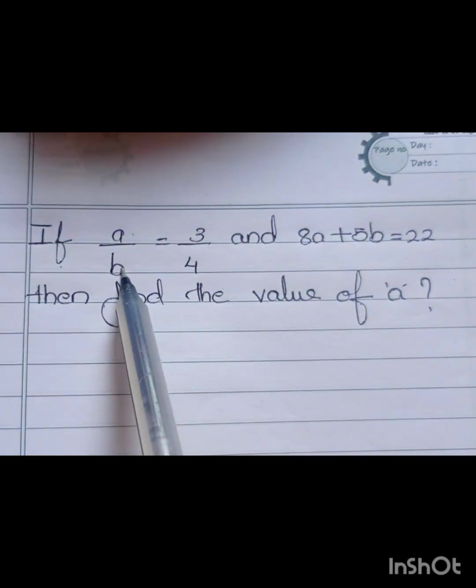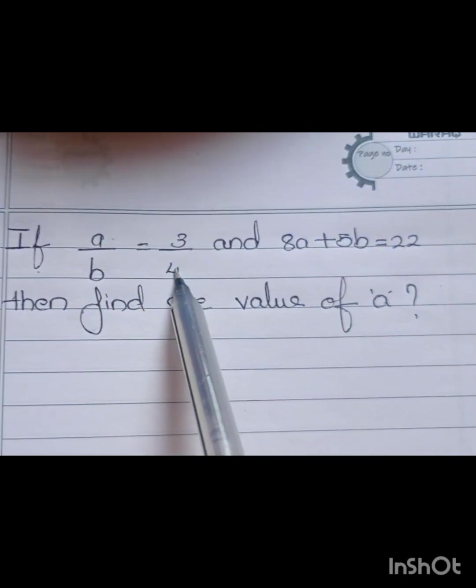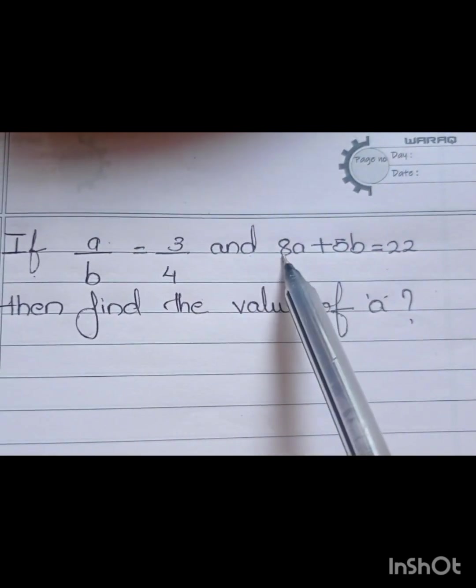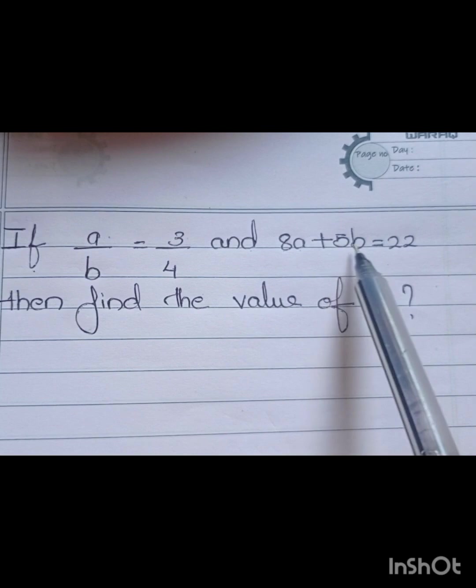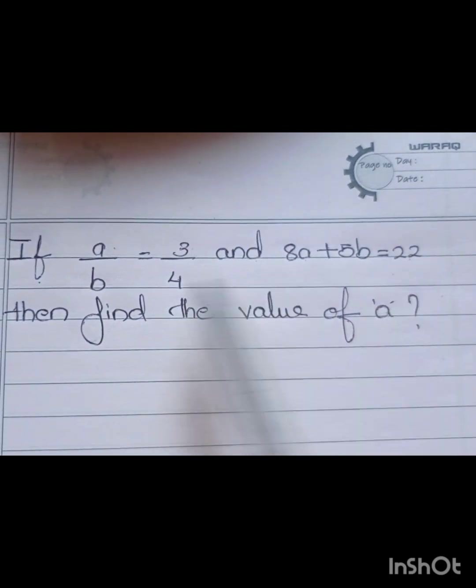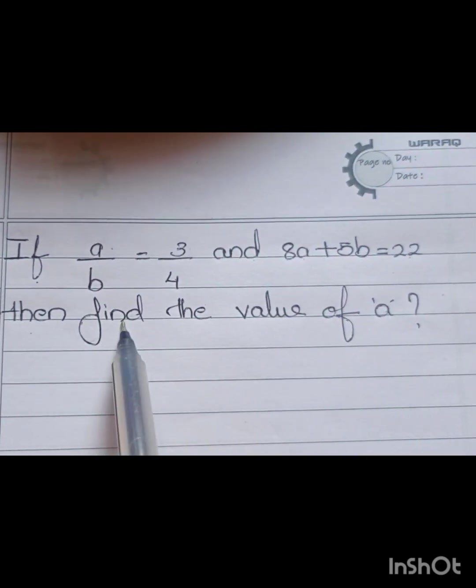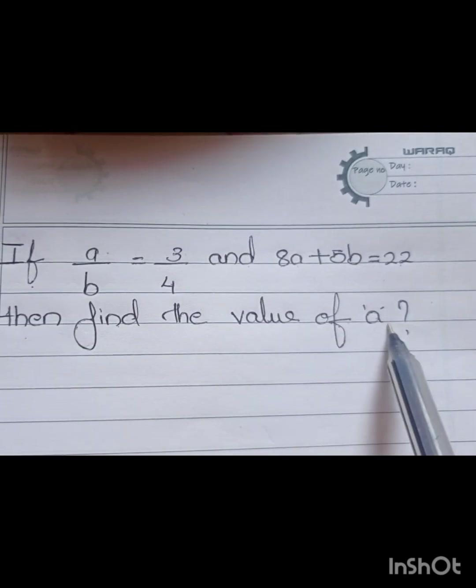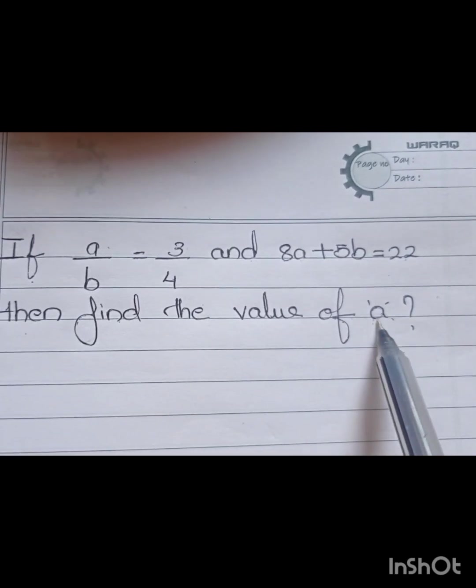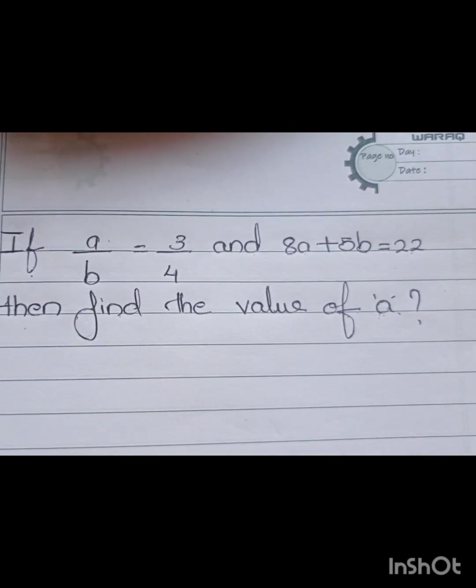If A by B equal to 3 by 4 and 8A plus 5B equal to 22, then find the value of A. Here, we are going to find the value of A.